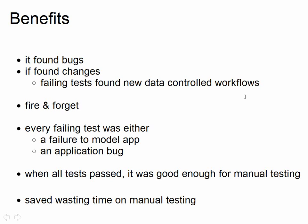Every failing test is either a model problem — we've modelled the app incorrectly — or the application has changed in such a way that our model has to change, or it's an actual bug. When all the tests pass, then it's good enough for manual testing. Then it's good enough for us to explore all the error combinations around this application, and this saved a lot of time on manual testing.